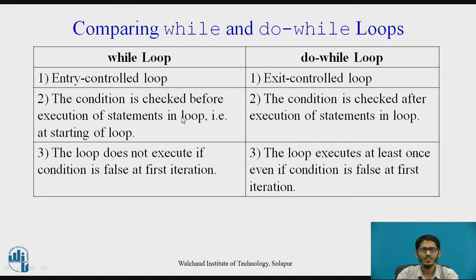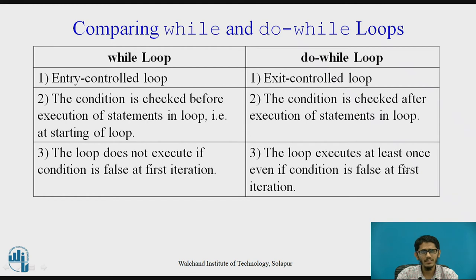Second, the condition is checked before execution of statements in the While Loop, that is at the start. Whereas in the Do While Loop, the condition is checked after executing the statements. Third, the While Loop does not execute if the condition is false at the first iteration. But the Do While Loop executes at least once even if the condition is false at the first iteration. Applications that require displaying some output even when a condition is false will use the Do While Loop.